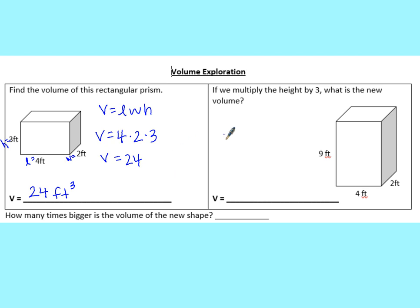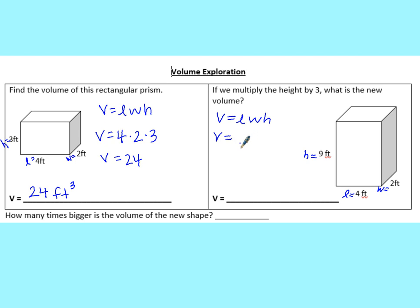Over on the right, it then says if we multiply the height by 3, what is the new volume? We have the same length of 4 and the same width of 2, but our height is now 9 — they multiplied that height by 3. Using V = length × width × height, we have 4 × 2 × 9, which gives us a volume of 72 feet cubed.